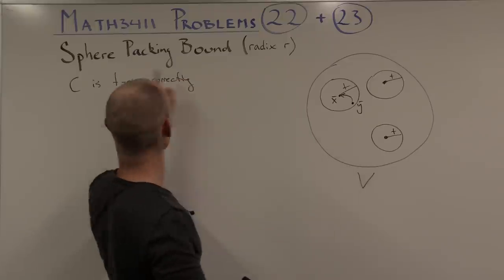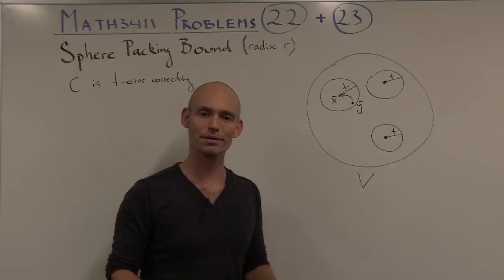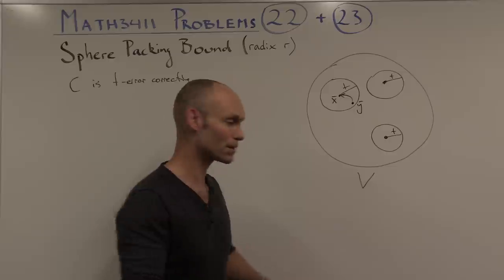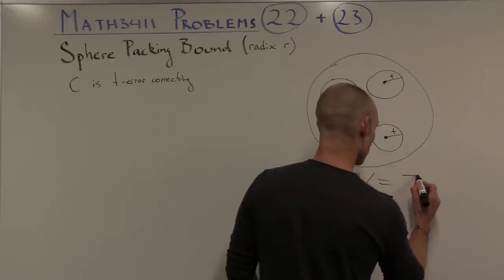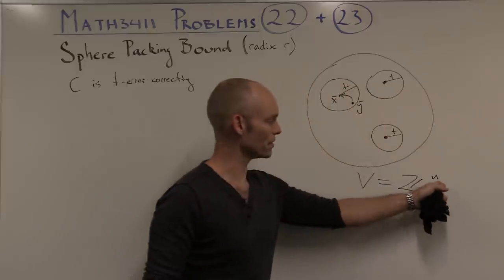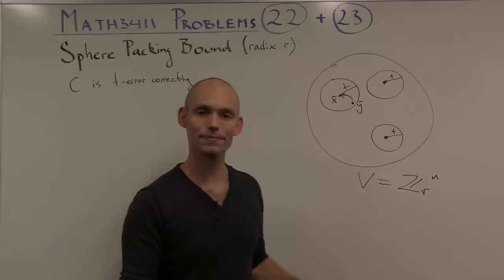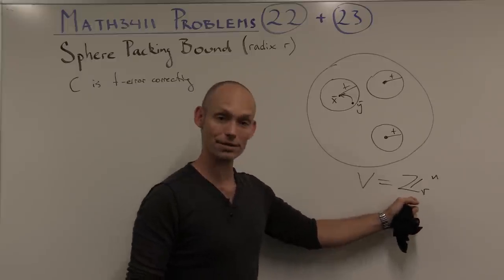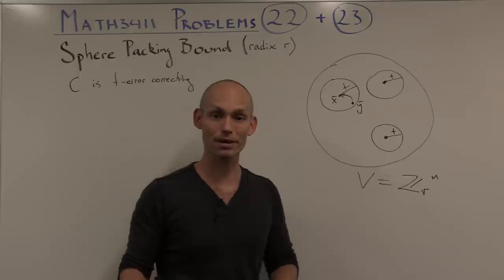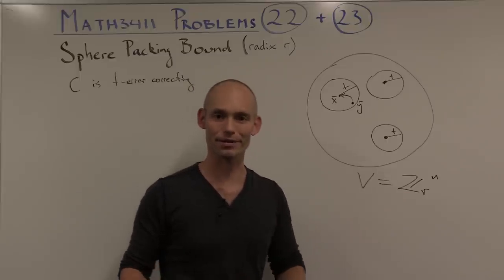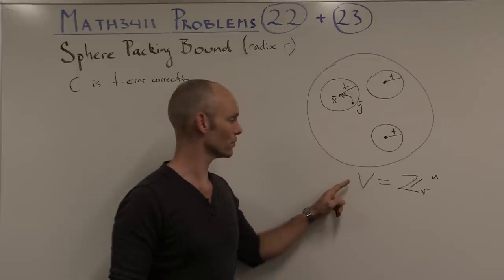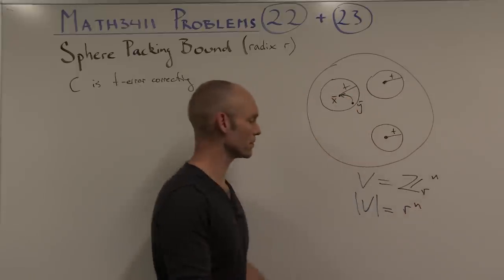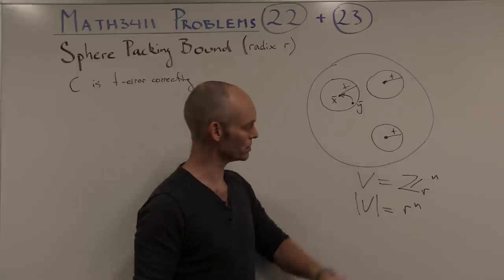Now all we need to do to find the sphere-packing bound is to express that observation mathematically. The first thing we can say is that we're talking about the words Z_r to the power of n, so they're all the strings of length n where the symbols are taken from Z_r, the numbers from 0 to r-1 mod r. The number of words in total is just r to the power of n.